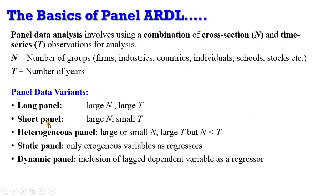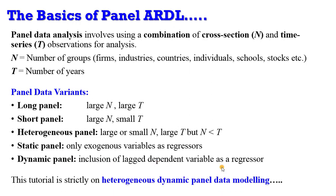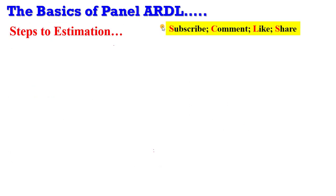The short panel has a large N and a small T. The heterogeneous panel has N that can be large or small, but T is large — overall N must be less than T. We also have the static panel, where you only include exogenous variables as regressors, while for dynamic panels you can include the lagged dependent variable as a regressor. This tutorial is strictly on heterogeneous dynamic panel data modeling, also known as panel ARDL.